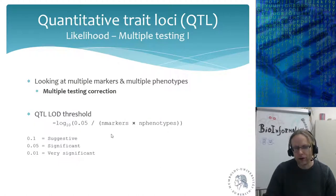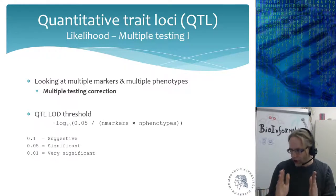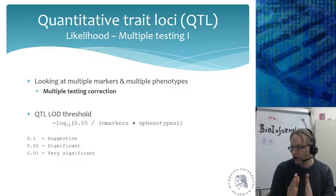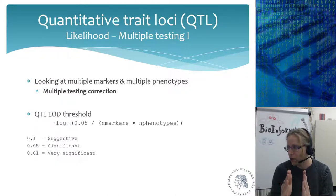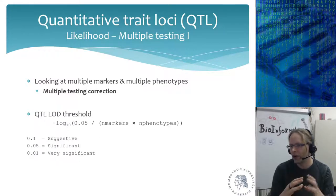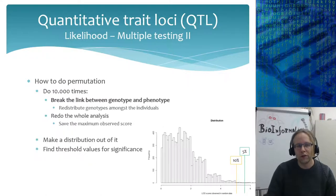We generally use Bonferroni correction for that. There is another approach, because since we are measuring many markers across the genome some of these markers are relatively close to each other. If at chromosome 1 at 10 megabases you are A, then at 100 base pairs away you are also A — the markers are linked and correlated with each other. To deal with that, you can use permutation.